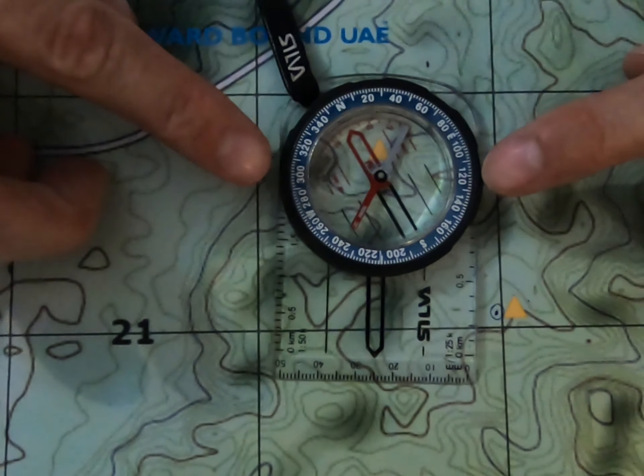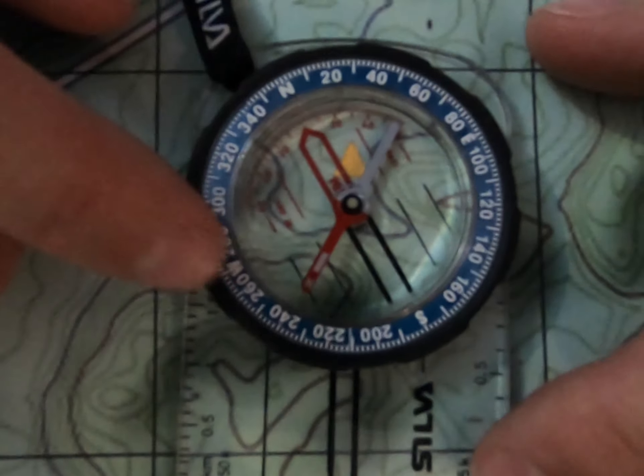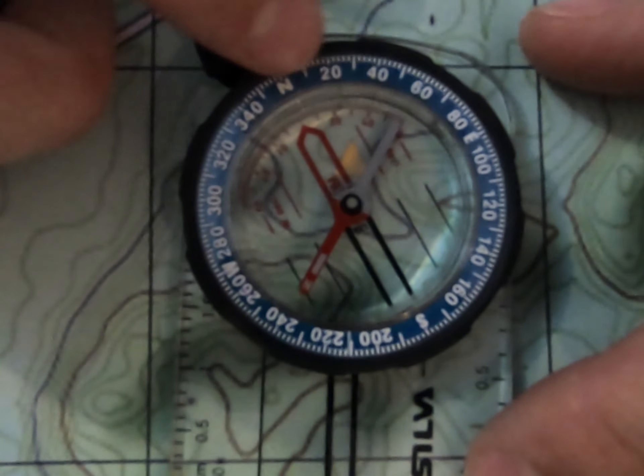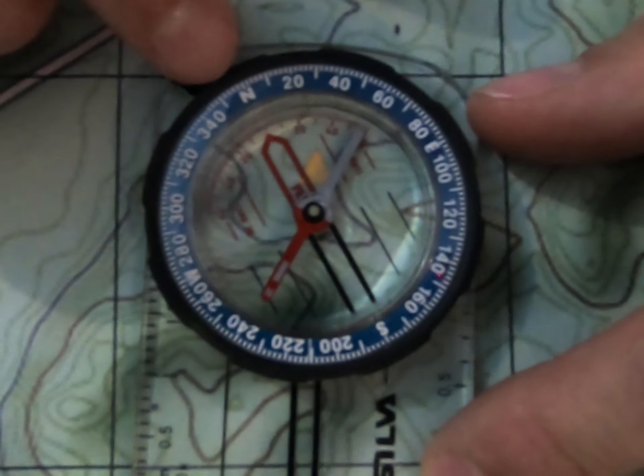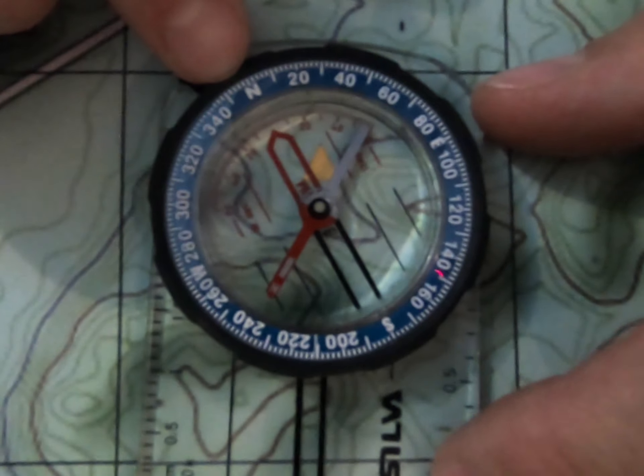Just at the top here, you'll see the bezel. And around the bezel, you can see there are our bearings, ranging from one up at north, all the way around to 359, just next to it.